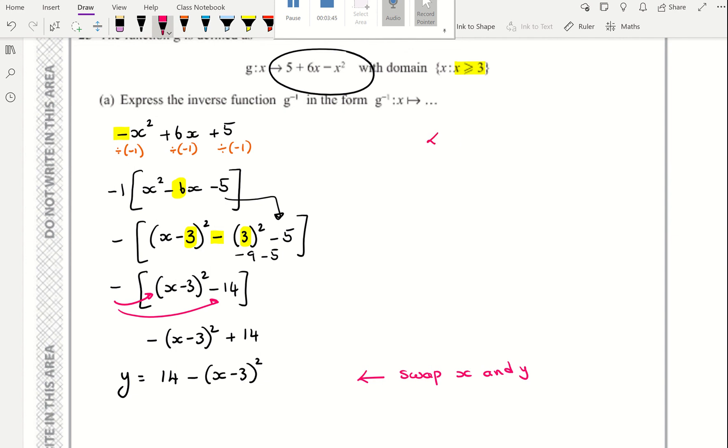At this point, I will swap x and y together. Step 1, complete the square, which we've done. Now, put it as an equation equal to y. Swap x's and y's together.